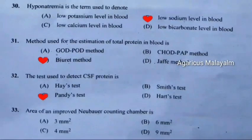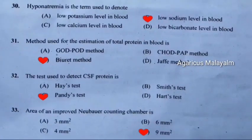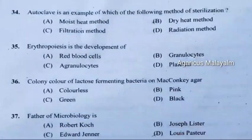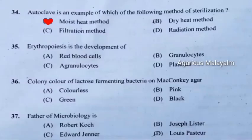Question 33: Area of an improved Neubauer counting chamber — correct answer is option D, 9 millimeter square. Question 34: Autoclave is an example of which of the following method of sterilization? Correct answer is option A, moist heat method.